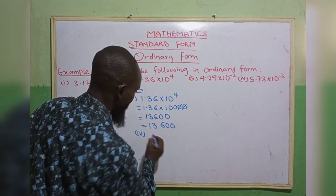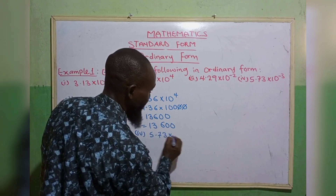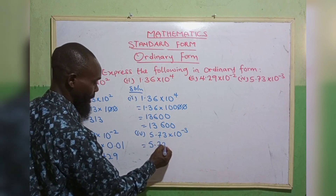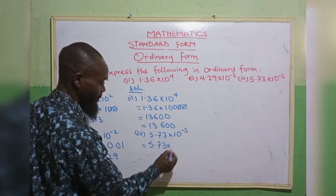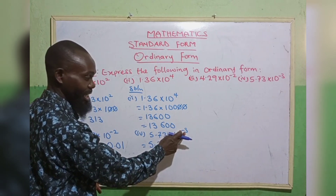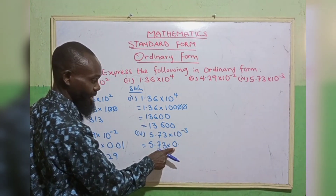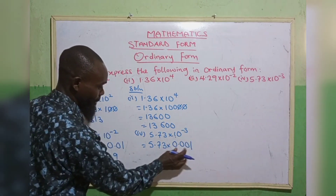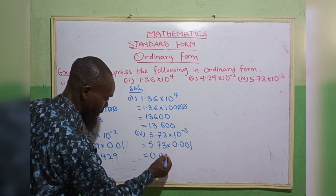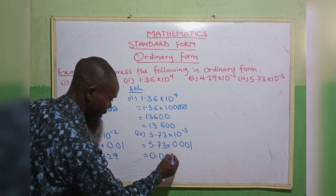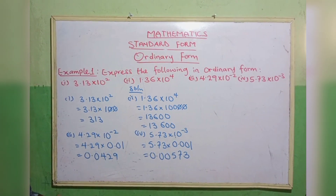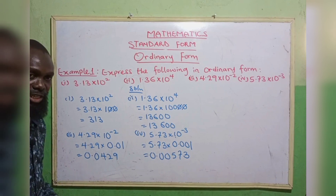The fourth one: 5.73 times 10 raised to the power minus 3. A power of minus 3 means 0 point, and 3 minus 1 gives 2 zeros after the decimal point — 1, 2 — then you place your digits. Taking this forward, we have 0.00573. So this is the way of converting standard form back to ordinary form.